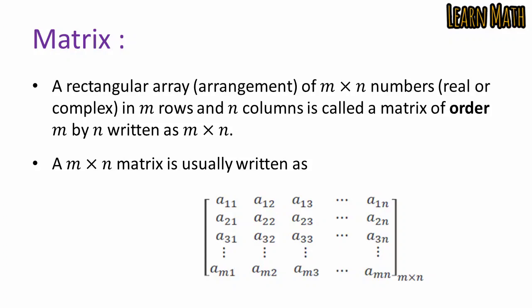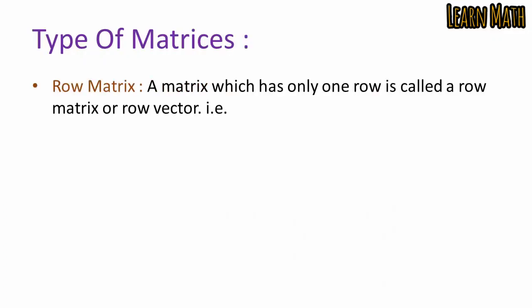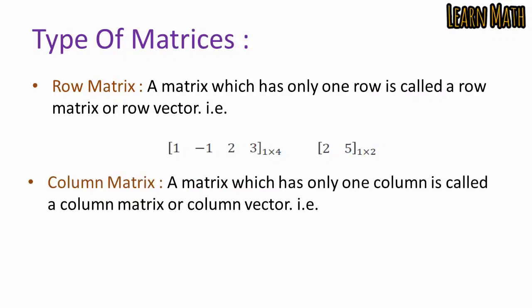Types of matrices: A row matrix is a matrix which has only one row, also called a row vector. For example, [1, -1, 2, 3] is a 1×4 matrix representing 1 row and 4 columns. Similarly, [2, 5] is a matrix of order 1×2, representing 1 row and 2 columns.